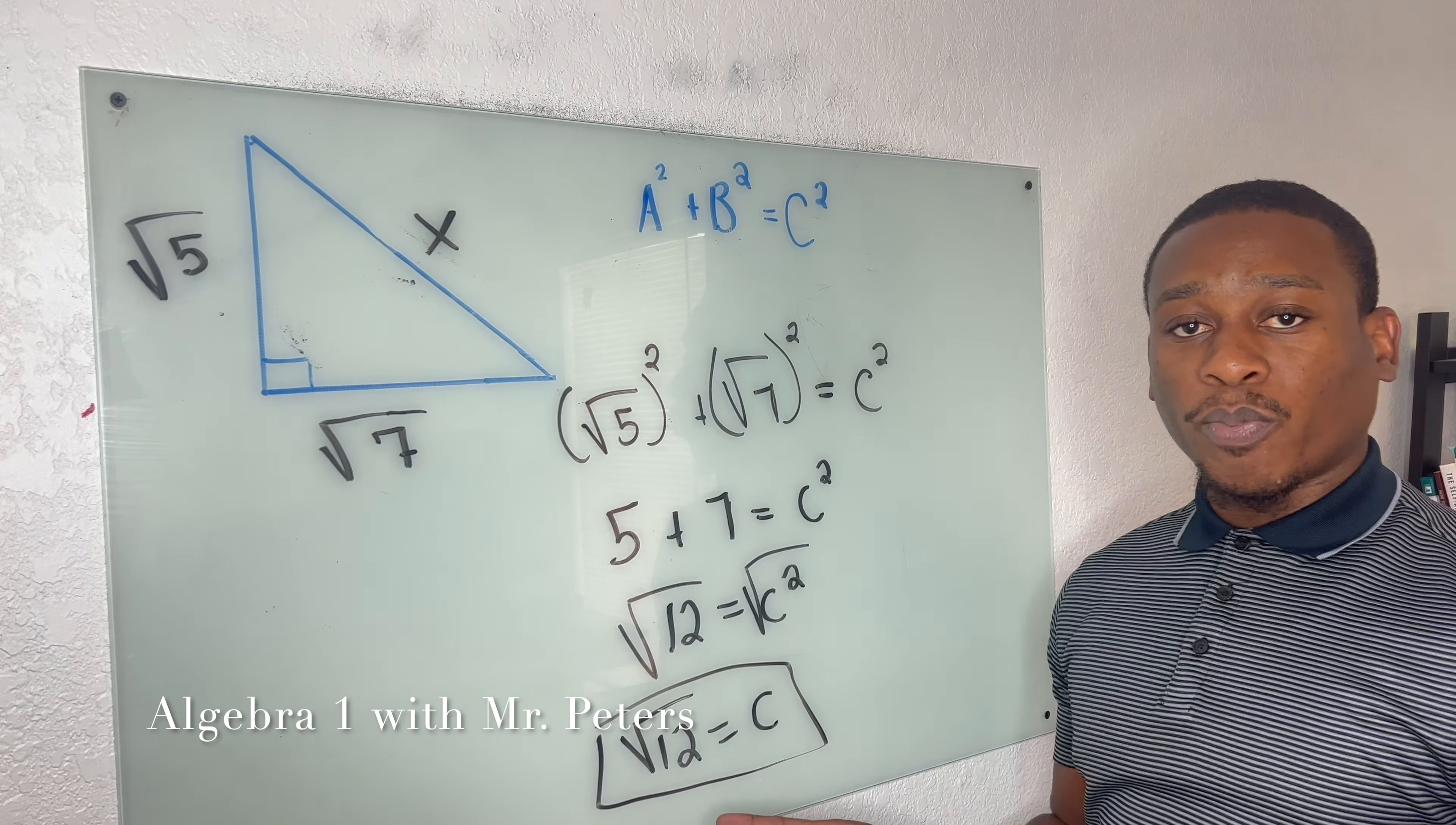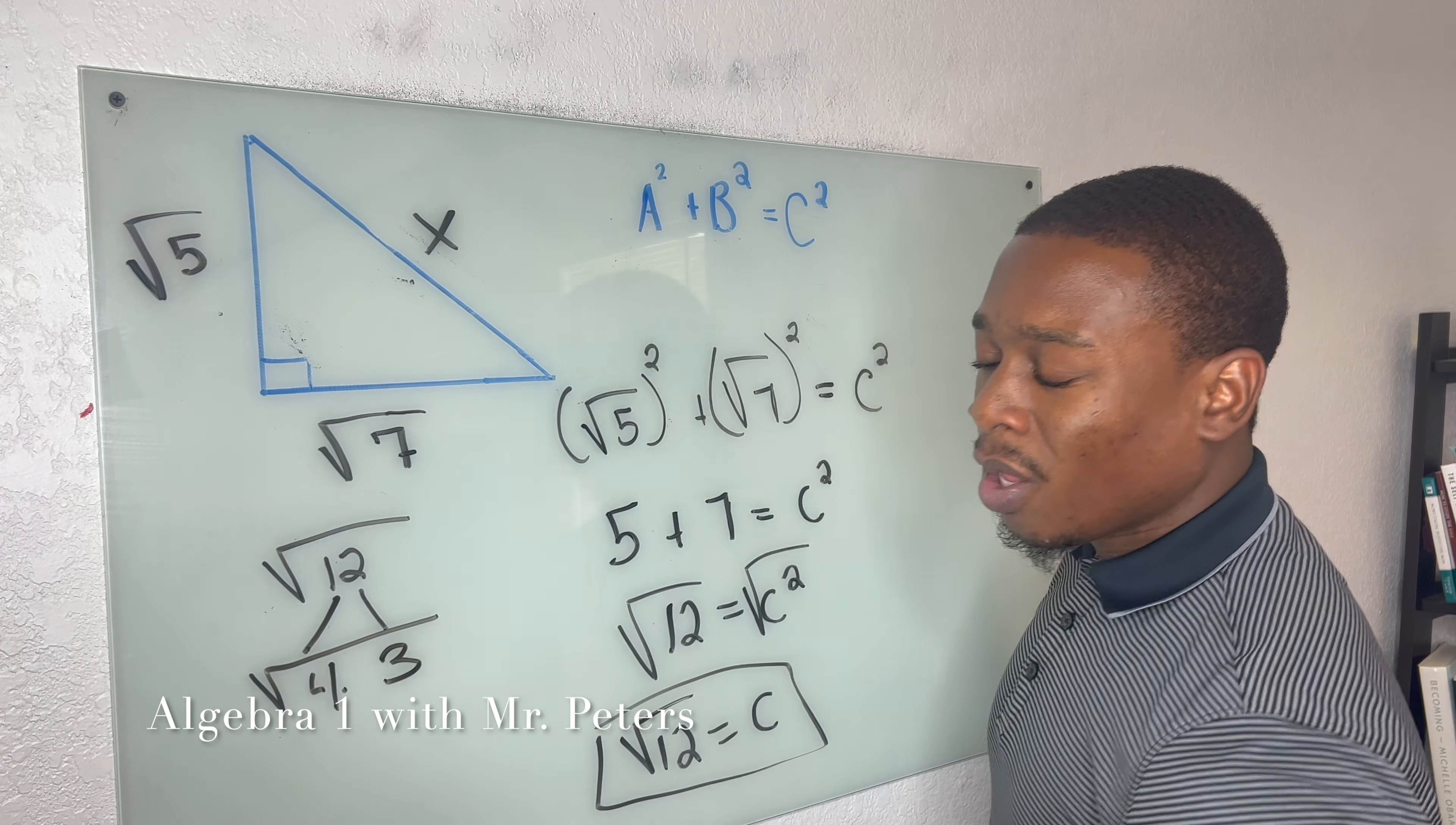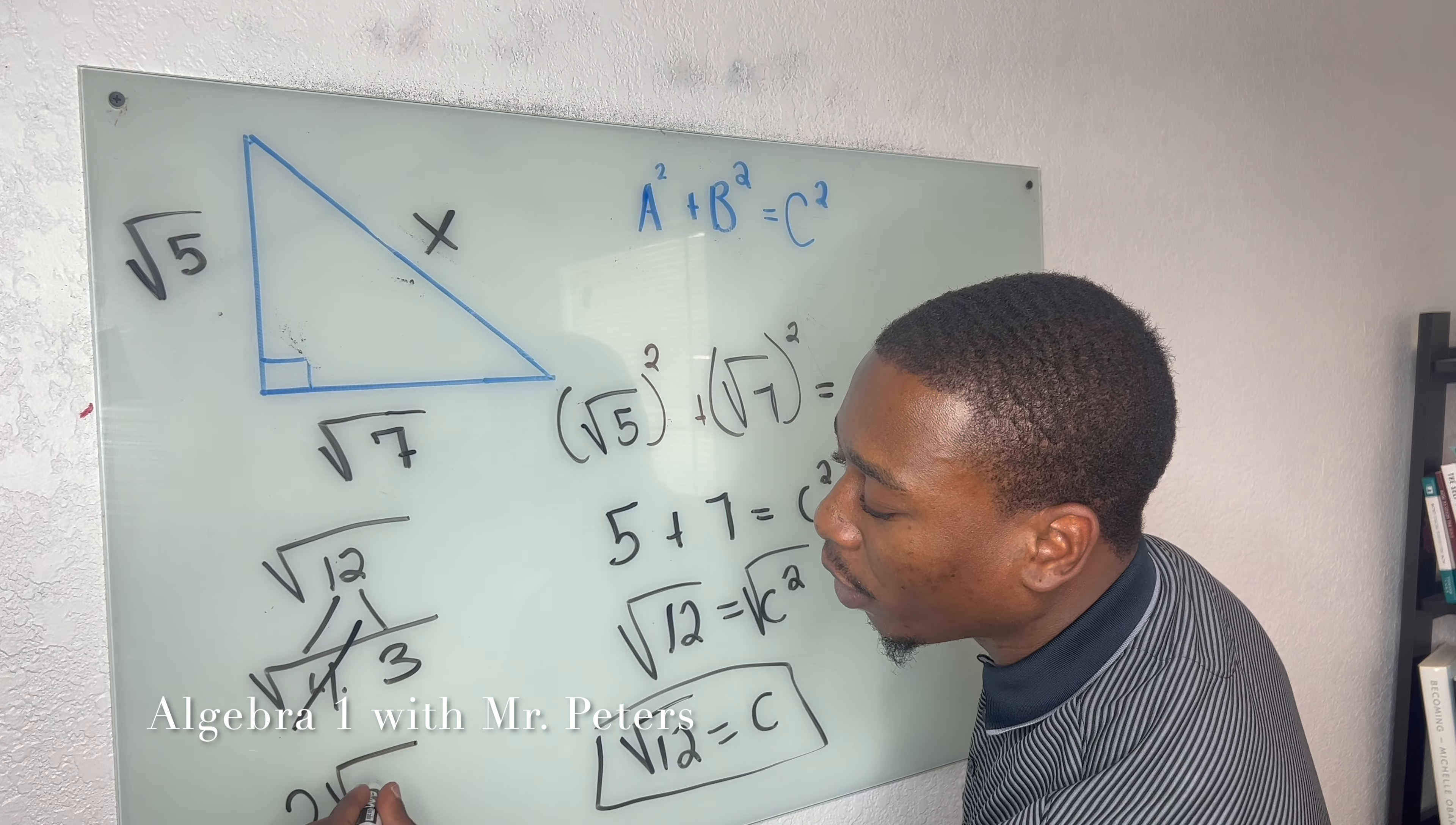But we're not done with this problem because we could break this radical down more. If we break it down, we're going to have 4 times 3. The perfect square of 4 changes and it'll come out as 2 radical 3.